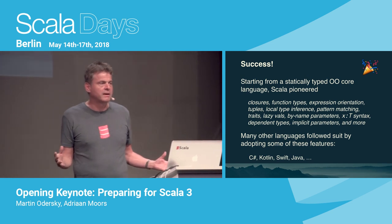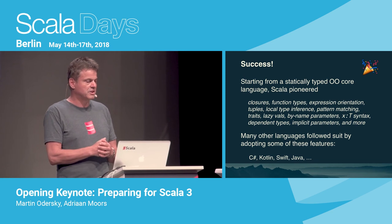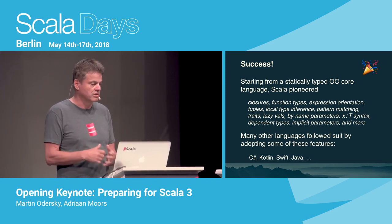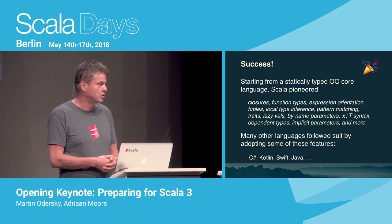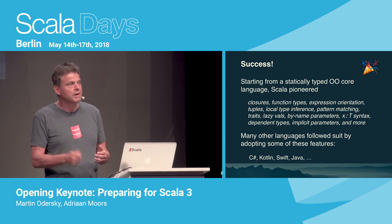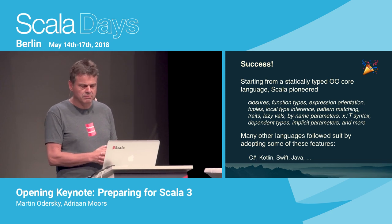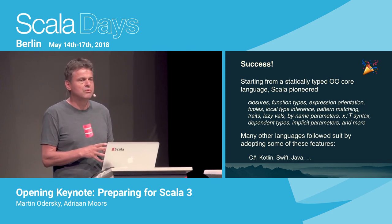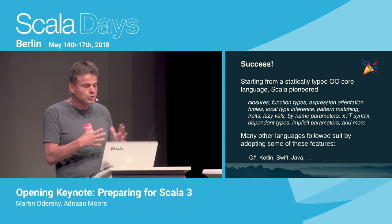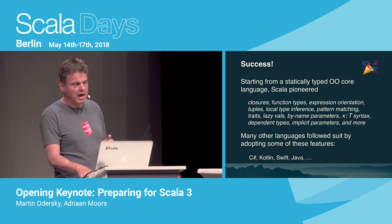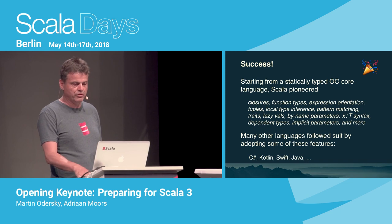By now in 2018, we're not alone. Many other languages have followed suit by adopting a subset of these features — C#, Kotlin, Swift, Java. Java is a latecomer, but every year it adopts one more feature. So you could say that Scala, as it was conceived, is really where a large part of the industry is moving to. In that sense, it's a success.